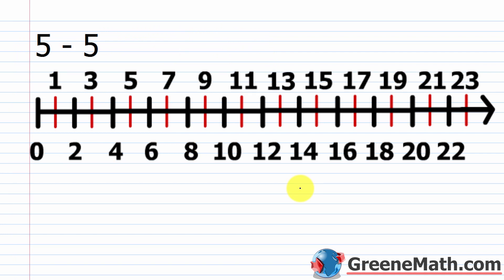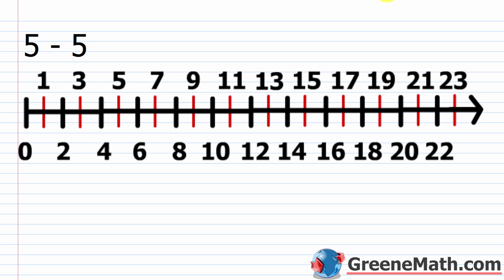We'll look at one last problem. Overall, this is pretty simple: if you're adding on a number line, start at the leftmost number and go to the right by the number of units you're adding. If you're subtracting on a number line, start at the leftmost number and go to the left by the number of units you're subtracting. We have 5 minus 5. We start at 5 on the number line, and since a number minus itself is 0, we go 5 units to the left: 1, 2, 3, 4, and 5. We end up at 0. So 5 minus 5 equals 0.